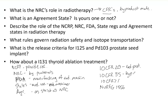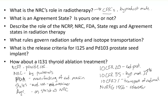10 CFR 35 covers byproduct material such as iridium and cobalt and their medical use. 10 CFR 71 covers packaging and transport of radioactive material — so when you have an HDR source and send it via FedEx, that's all based on 10 CFR 71, including dose rate or exposure rate at one meter and required signage.